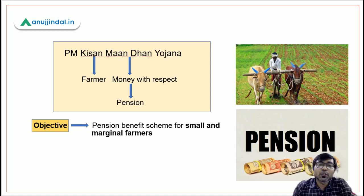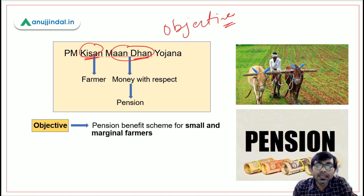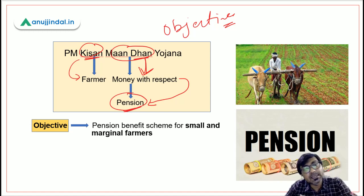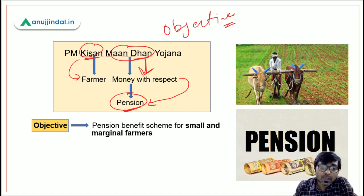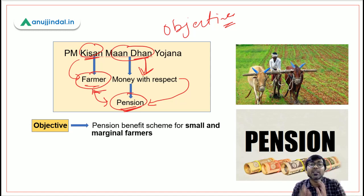Let's start with the discussion of Pradhan Mantri Kisan Mandhan Yojana. First, let us simplify the objective of the scheme. Under the name of the scheme, there are two words: one is 'Kisan' meaning farmer, and one is 'Mandhan' meaning money with respect — in other words, pension. So there are two keywords: farmer and pension.